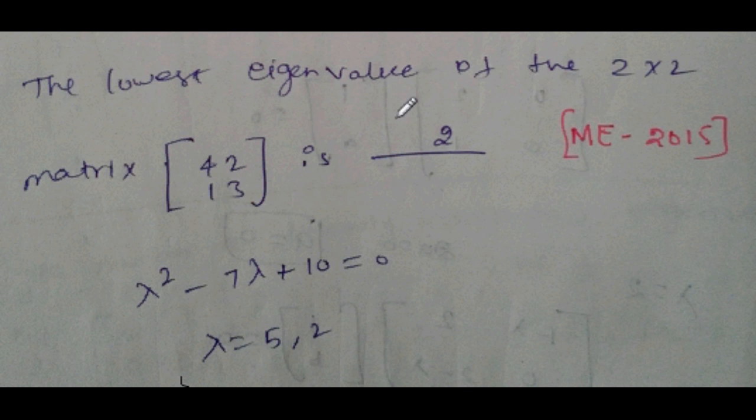The lowest eigenvalue of the 2 cross 2 matrix [4, 2; 1, 3] is. Lambda squared, 4 plus 3 is 7. Determinant: 4 into 3 is 12 minus 2 is 10. Lambda squared minus 7 lambda plus 10. Factorize: lambda equal to 5, 2.